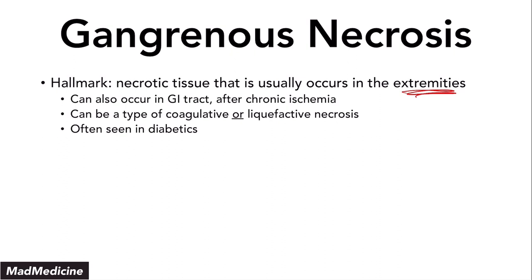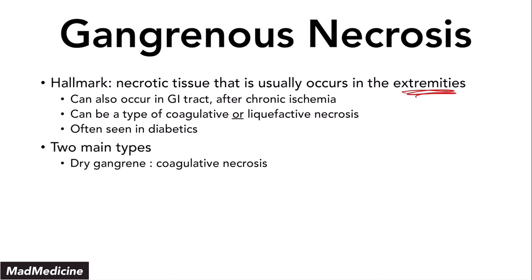That is why we see gangrenous necrosis in diabetics — you can largely equate the two. Diabetics can even get diabetic gastroparesis, so it can also affect the GI tract, but especially think of the extremities. There are two main types: wet gangrene and dry gangrene. Dry gangrene involves coagulative necrosis, while wet gangrene involves liquefactive necrosis — the names give it away, since liquefactive is wet.